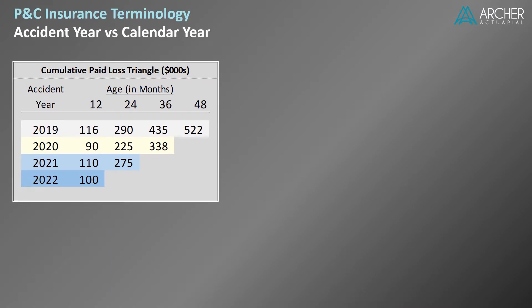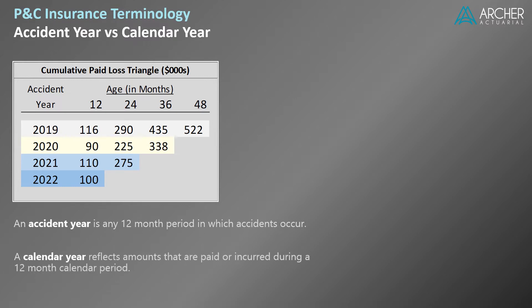Accident year and calendar year are the two most common ways of organizing loss data. An accident year is any 12-month period in which accidents occur. A calendar year reflects amounts that are paid or incurred during a 12-month calendar period. The calendar year concept can be generalized to include premiums and many other insurance metrics. However, in this video, we're going to focus on the definition as it relates to paid and incurred loss.